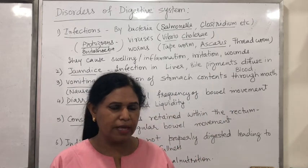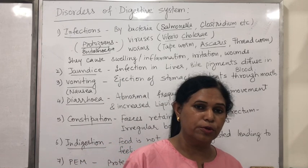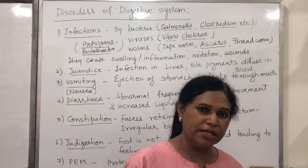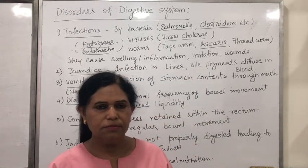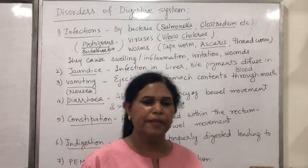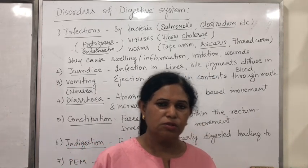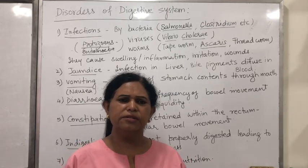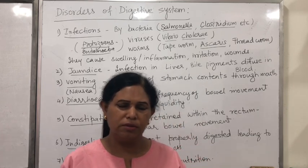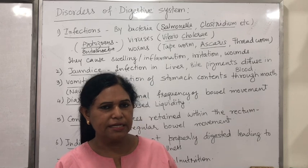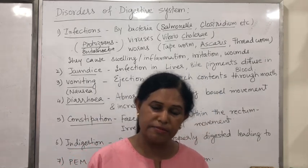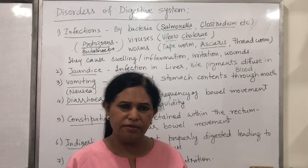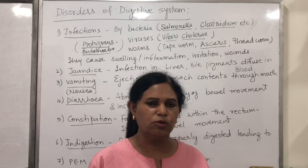In marasmus, there is both protein and energy malnutrition, whereas in kwashiorkor it is typically severe protein malnutrition. In kwashiorkor, the child has fat and calories in the body but proteins are lacking, giving a typical symptom of pot belly — the belly protrudes. In marasmus, small children are very thin, lean, and weak — you can even count the bones, that's how severe the condition is.